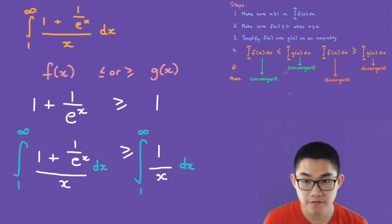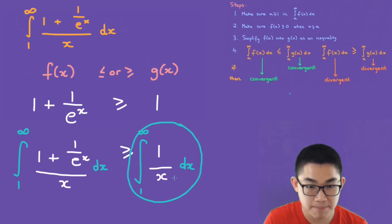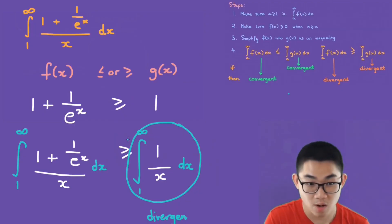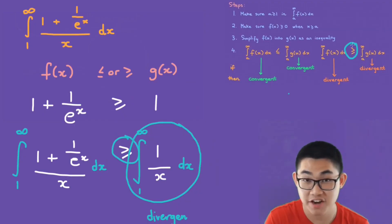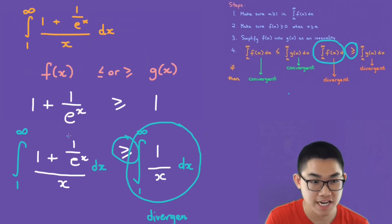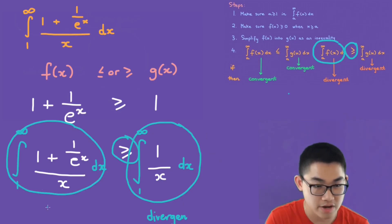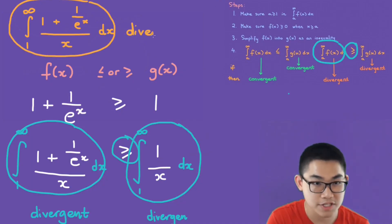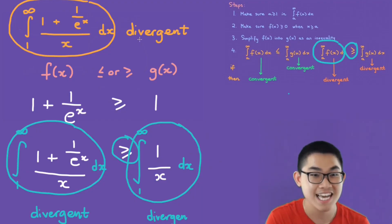In step four, we find out if g of x is convergent or divergent. Looking at the integral of one over x from one to infinity, the p value is one, which means this integral is divergent. Since g of x is divergent, and the signs match — f of x is greater or equal to g of x — then f of x is also divergent. So this integral is divergent, which means our original function, the integral from one to infinity of one plus one over e to the power of x all over x, is a divergent integral.